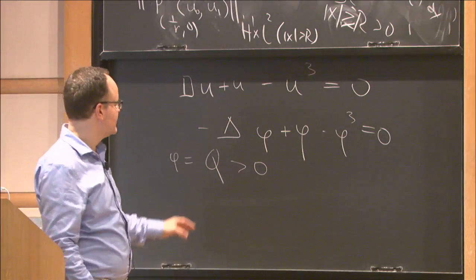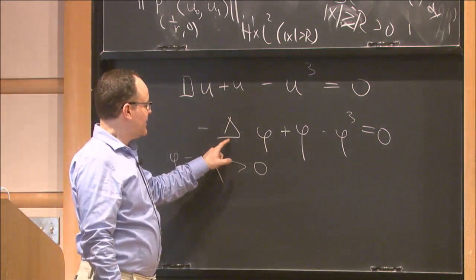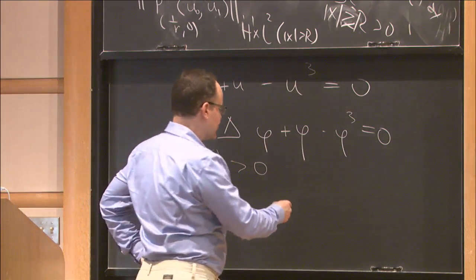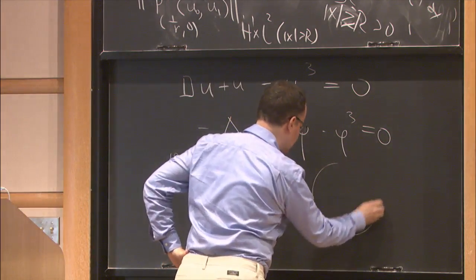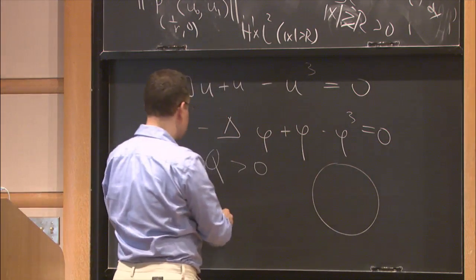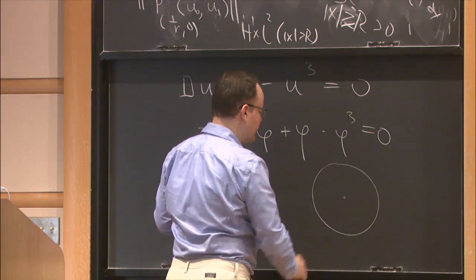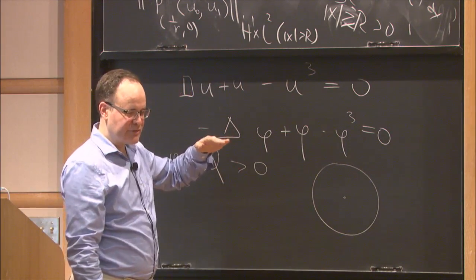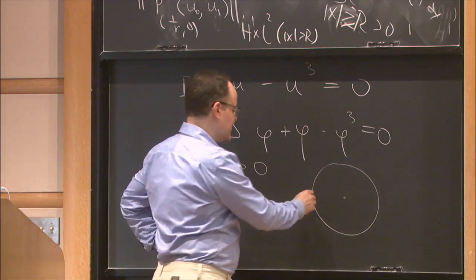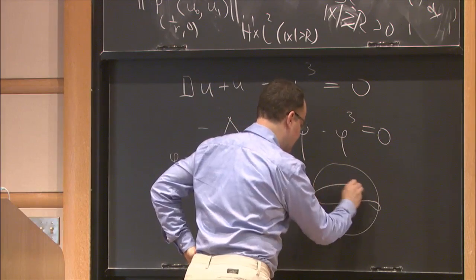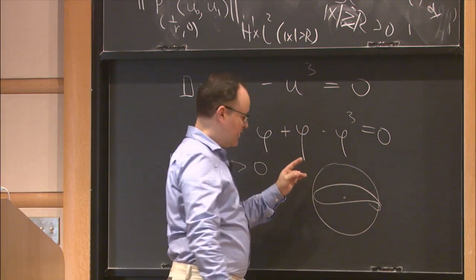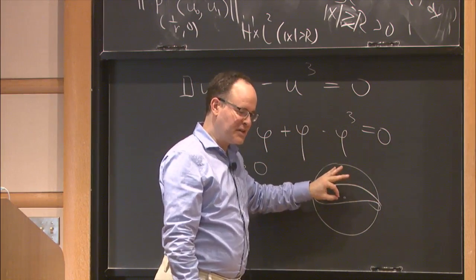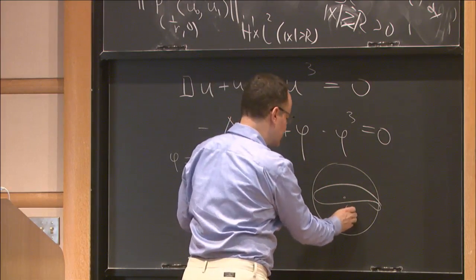Let me mention for completeness: Nakanishi and I found that for the subcritical equation there is a unique radial positive ground state Q solving -ΔQ + Q - Q³ = 0. Uniqueness is non-trivial — research papers from the 1960s by Coffman, Serrin, Tang. If you mess with the nonlinearity, uniqueness can fail or be unknown. What Nakanishi and I proved: near the ground state Q, for energy slightly above E[Q], the dynamics is completely described.